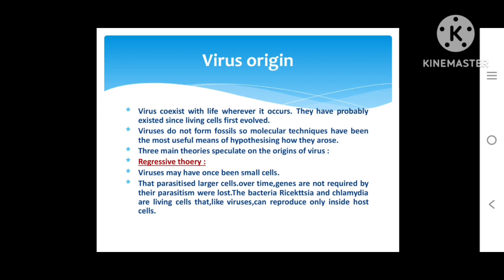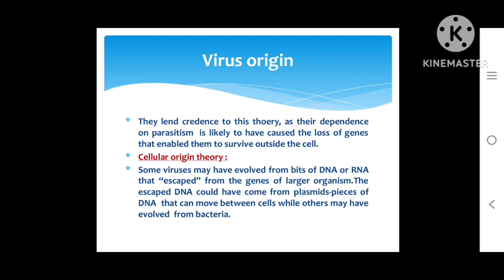The first is the regressive theory, in which viruses may have once been small cells that parasitized larger cells. Over time, genes not required for parasitism were lost. Bacteria such as Rickettsia and Chlamydia are living cells that, like viruses, can only reproduce inside a host cell. These lend credence to this theory, as their dependence on parasitism likely caused the loss of genes.